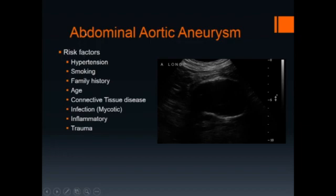Risk factors for abdominal aortic aneurysm are hypertension, smoking, family history, age, connective tissue disease, infection — this is called mycotic aneurysm — inflammation, and trauma.